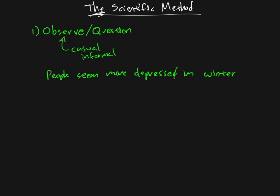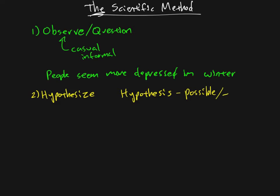The second step is to come up with a hypothesis. A hypothesis is essentially a possible, or tentative, explanation. You're saying maybe this is the reason — you're being tentative in the sense that you're very open to the idea that it's wrong and that some other explanation is correct. You might have very good reasons for your ideas, or they might really just be guesses, depending on what else you know about what's going on.